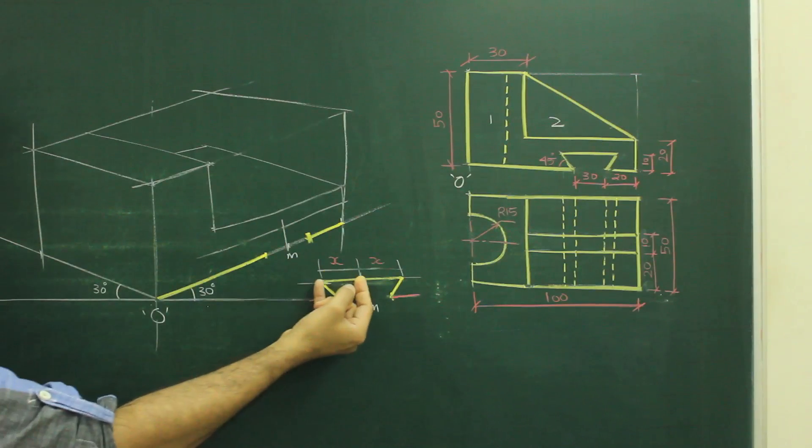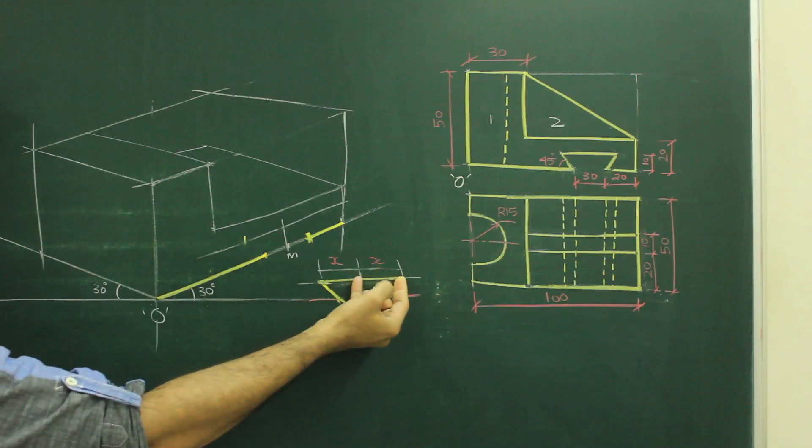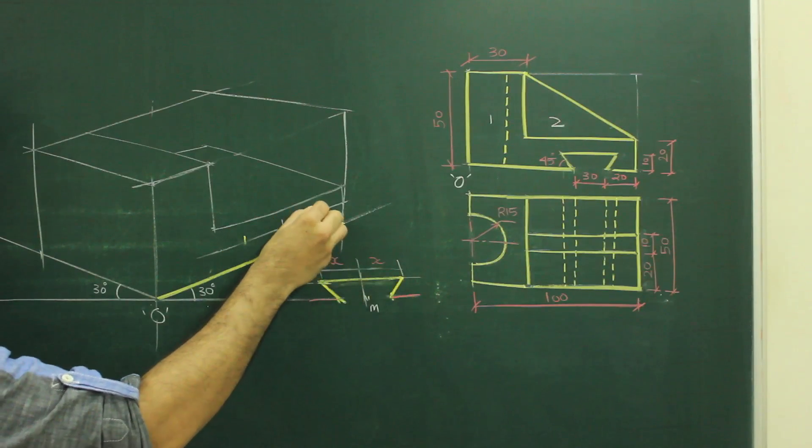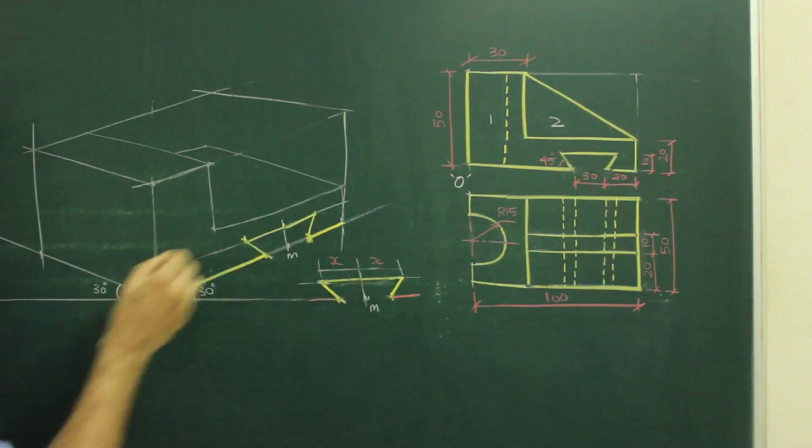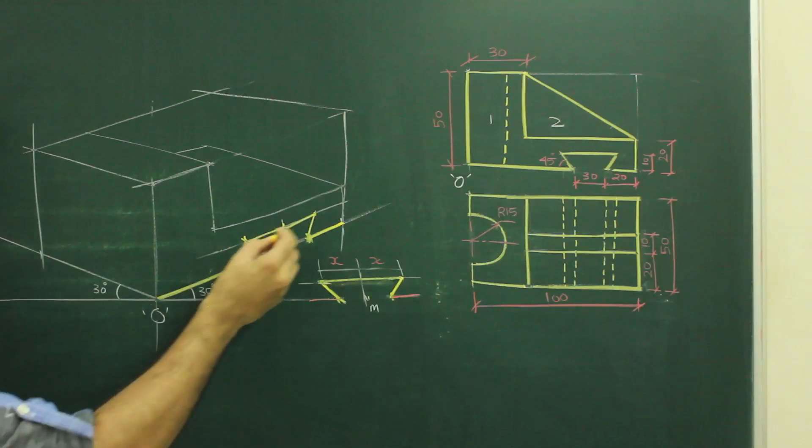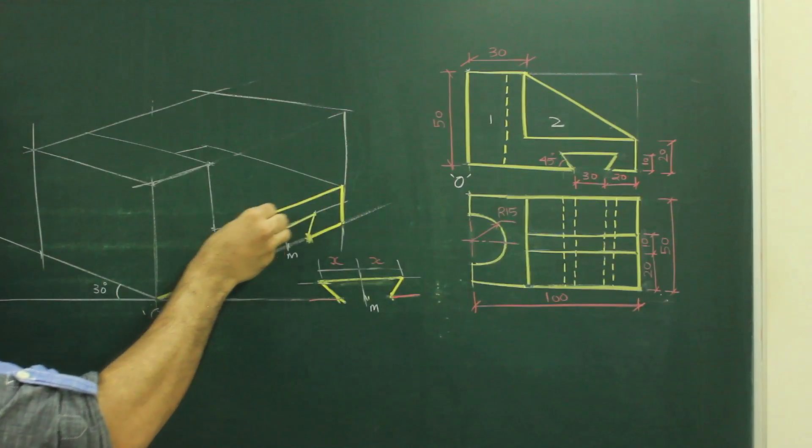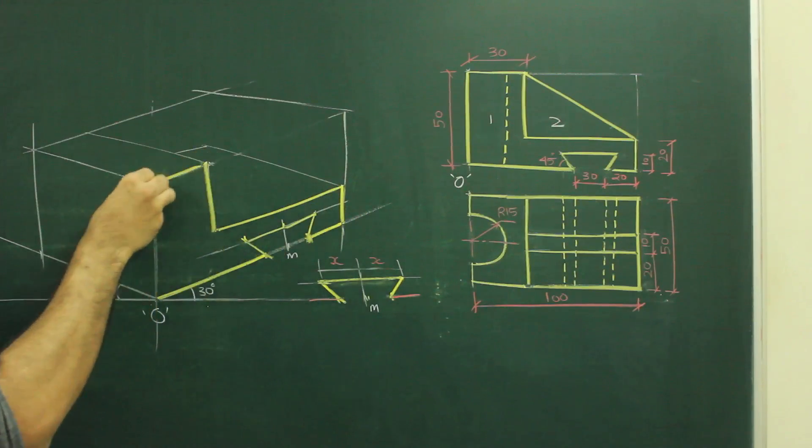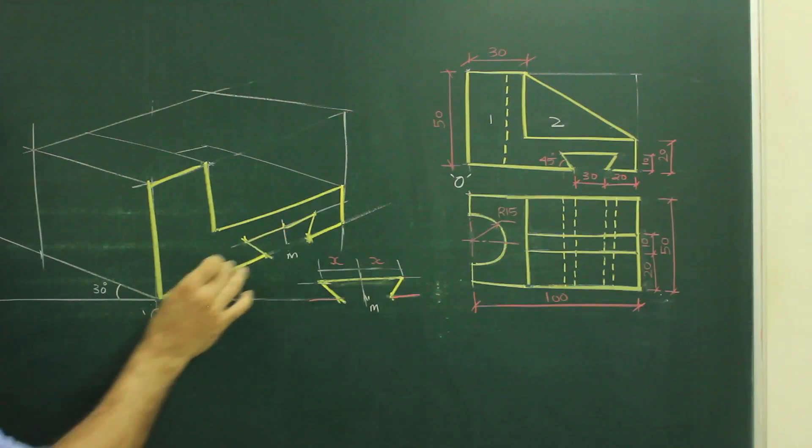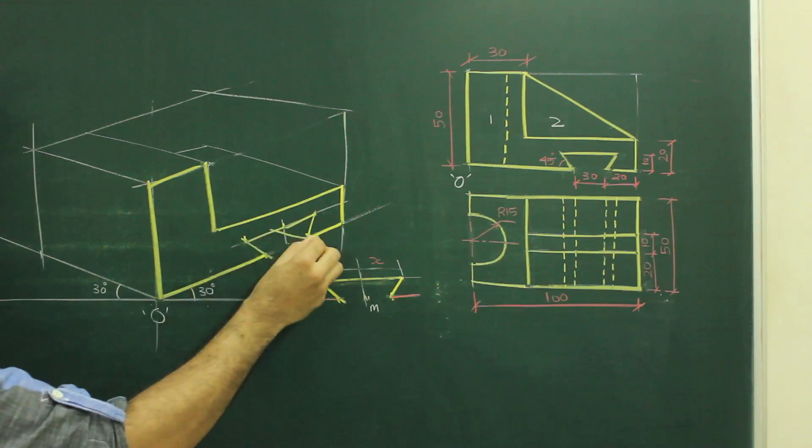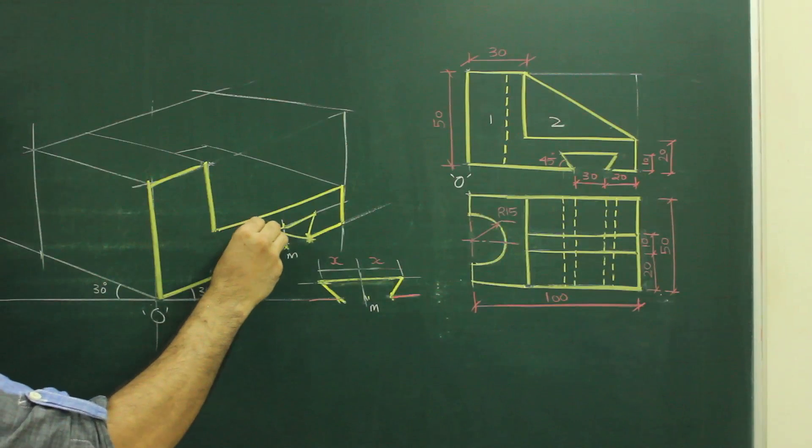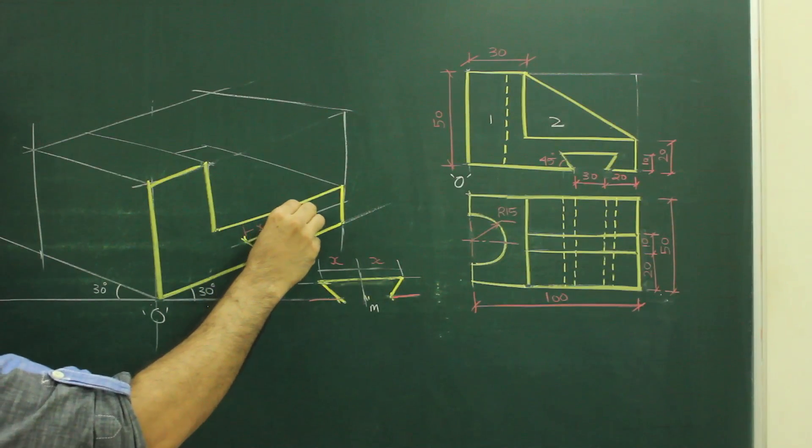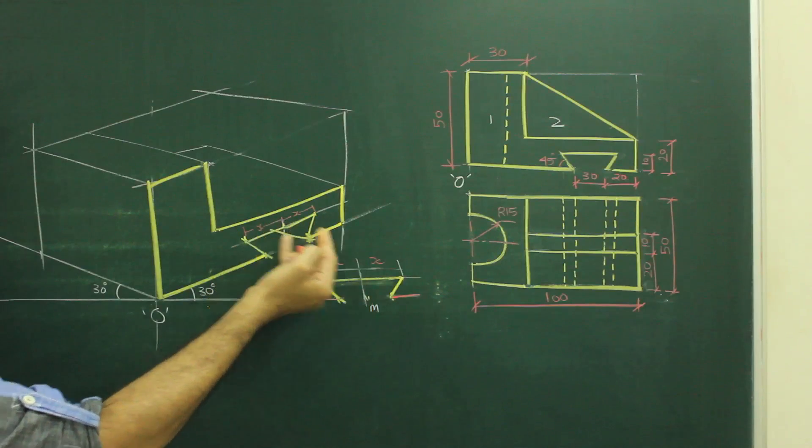So we will take distance x, we will cut here, x, cut here, and then join. So we got this slot. You can darken this part. So we are done with front. And there will be a line over here. But always remember, you take this dimension up and then you have to transfer this x on both the sides. Remember to transfer this x like this.